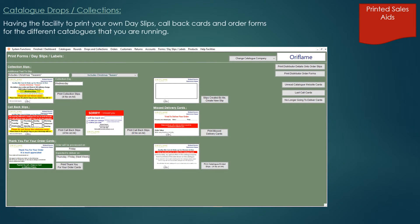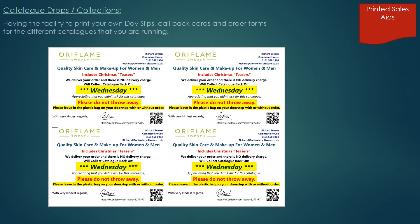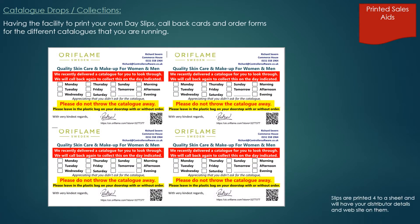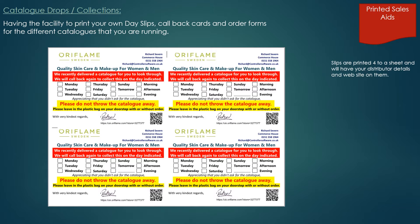Catalogue Controller gives you the facility to print your own day slips, callback cards and order forms for the different catalogues that you are running. For instance, Betterware, Aura Flame, Viva and British Basics are already coded into the system. Callback slips are easily printed onto A4 paper — four to a sheet — and will have your distributor details and website on them, along with your selected day that you intend to collect the catalogue back. Callback slips are printed in the same way, four to a sheet, with an area for you to tick when you are going to try and call to get the catalogue back.